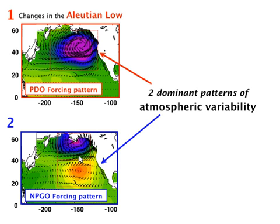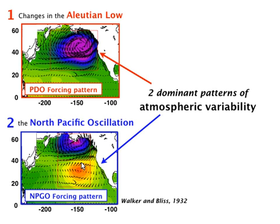This NPGO forcing pattern is not new — it was first described in the literature by Walker and Bliss in 1932 and referred to as the North Pacific Oscillation. In some sense, the NPGO is the oceanic expression of the North Pacific Oscillation.